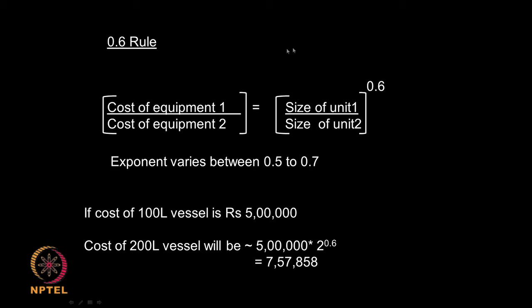If I am operating a 100 liter vessel and it costs me 5000 rupees, how much will it cost to operate a 200 liter vessel? I put cost of original as 5000, size of original as 100, size of new as 200, and it approximately gives me 7578. The same rule can be used for calculating the cost of the equipment. If a 100 liter equipment costs 5 lakhs, the 200 liter equipment costs how much? Using this formula it gives 7.57 lakhs — approximately when doing ballpark calculations this is very useful, although ultimately you may go to the vendor to find the actual cost. This 0.6 rule is very useful both for costing an equipment as well as for operating an equipment.